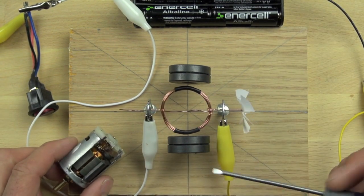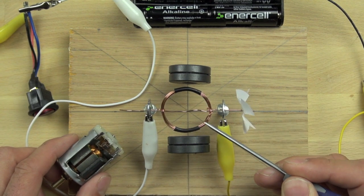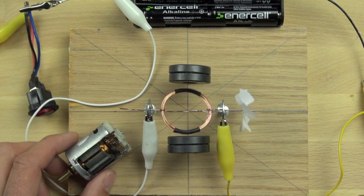But those opposite poles are important so that as the armature, which is this guy, represented by this coil here, as that flips around, it continues to move.